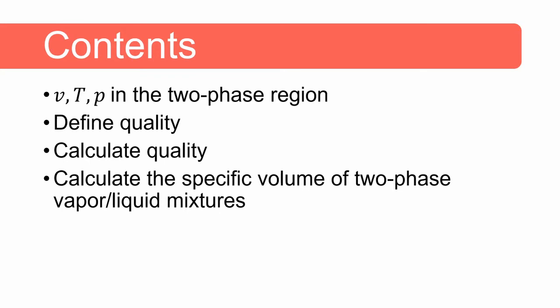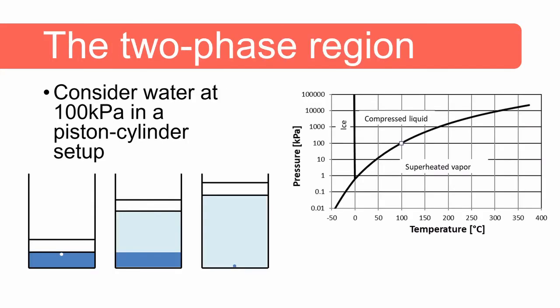We will define quality, we will look at how we can calculate quality, and we will look at an example where we calculate the specific volume of two-phase vapor liquid mixtures. The saturation, or equilibrium temperature, of water at 100 kPa is 99.61 degrees Celsius and lies on the boundary line between the liquid and vapor phases, which is shown by the square. However, the state at 100 kPa and 99.61 degrees Celsius can vary from a saturated liquid to a two-phase mixture to a saturated vapor.